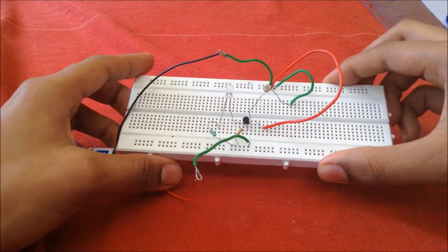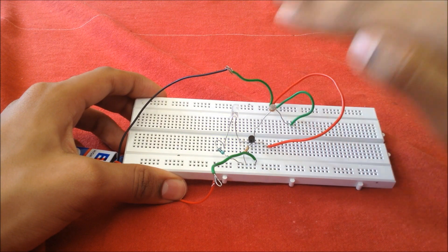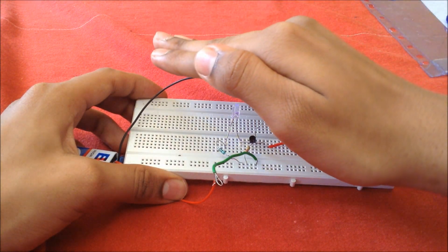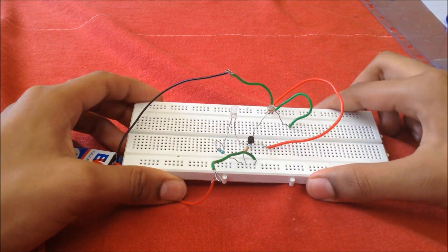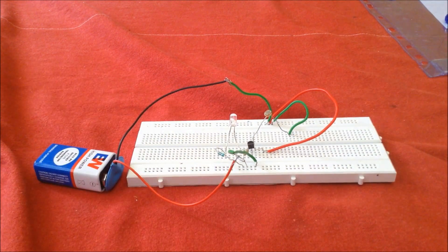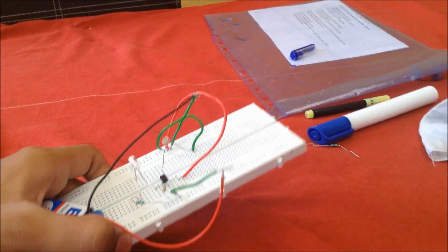So now our circuit is ready. The moment it senses darkness, the LED should light up. To test it, you can just move around with it and sense the presence of darkness in different rooms.